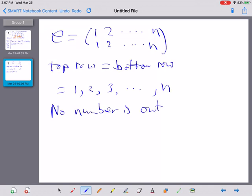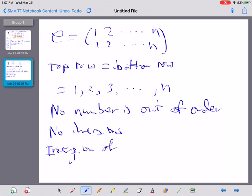And so none of the numbers are out of order. And what that means is that there are no inversions. And that says that the inversion number of E is equal to 0.